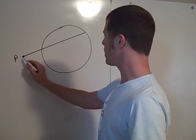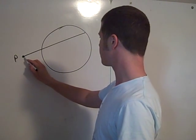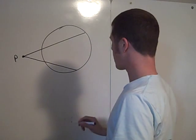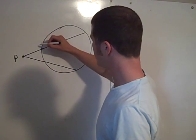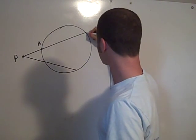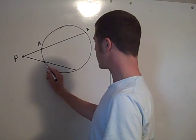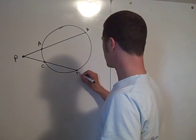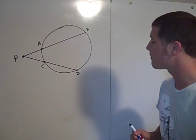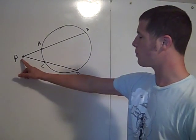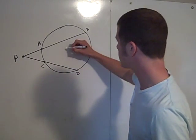Emanating from point P are two secant segments, and the two secant segments intersect the circle at points A and B, and C and D.